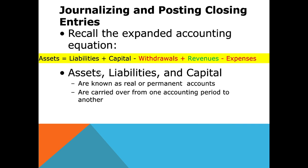Assets, liabilities, and capital accounts are known as real or permanent accounts and are carried over from one accounting period to another. For example, if there's $10,000 in your bank account on December 31st at midnight, on January 1st you still have $10,000. Similarly, a truck purchased at $26,000, supplies, or a loan mortgage — whatever the balance is on December 31st — will be the same on January 1st.